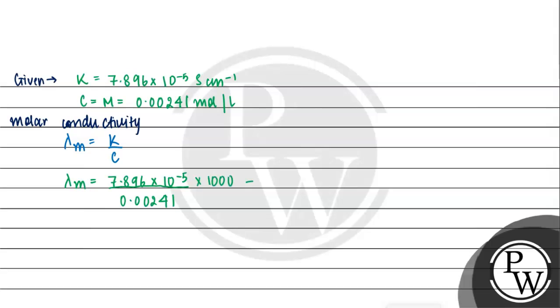We multiply by 1000 to keep our units correct. When calculated, this will come out to be 32.76 cm square mol inverse.